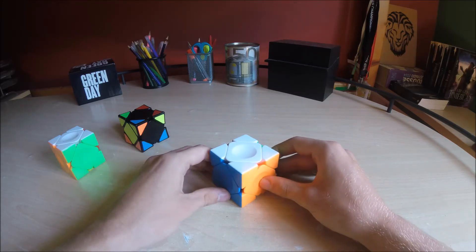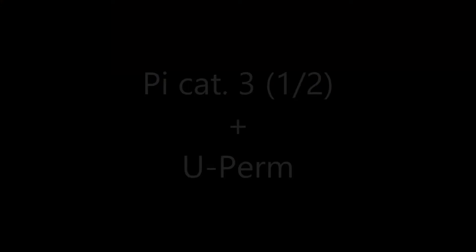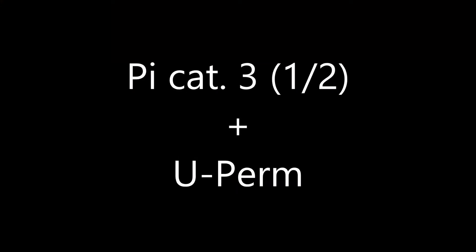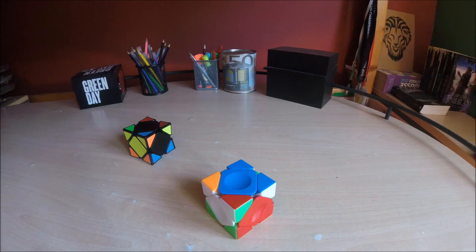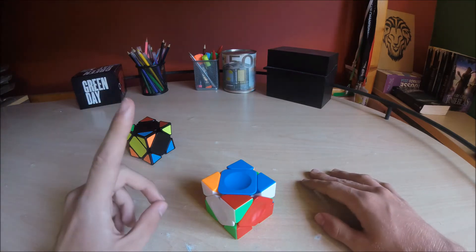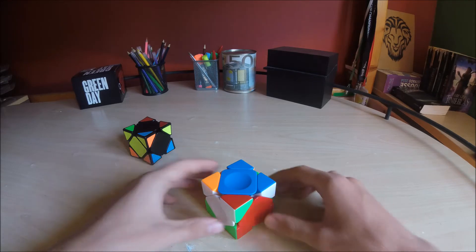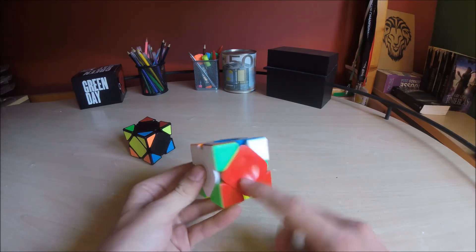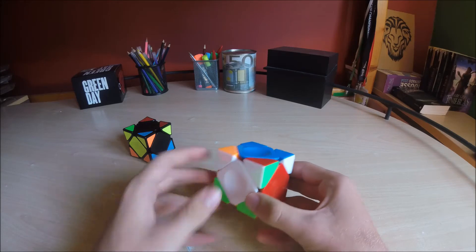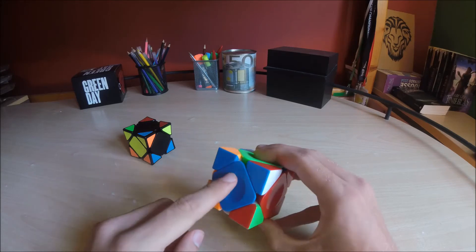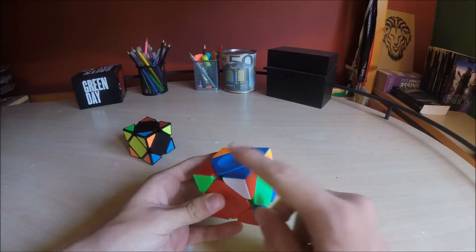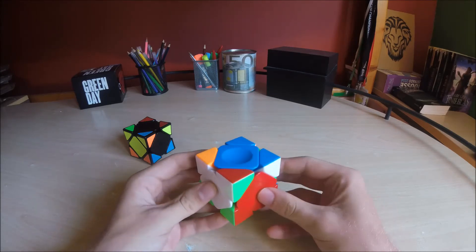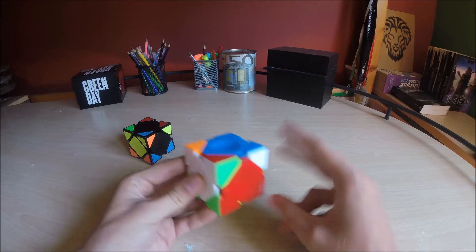Let's do the next cases. In the next case we now have the variation of the U-perm. We can see it has two blocks, one in the front, another one in the back, and three centers — that gives in this situation a U-perm. For this one I will show you two algorithms.